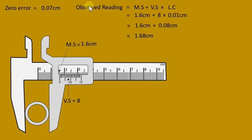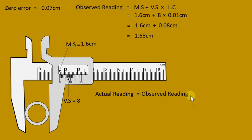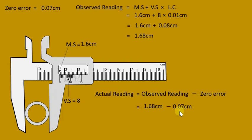This observed reading includes the zero error. For a positive zero error, the actual reading = observed reading − zero error = 1.68 cm − 0.07 cm = 1.61 cm. This is the actual diameter of the ring.